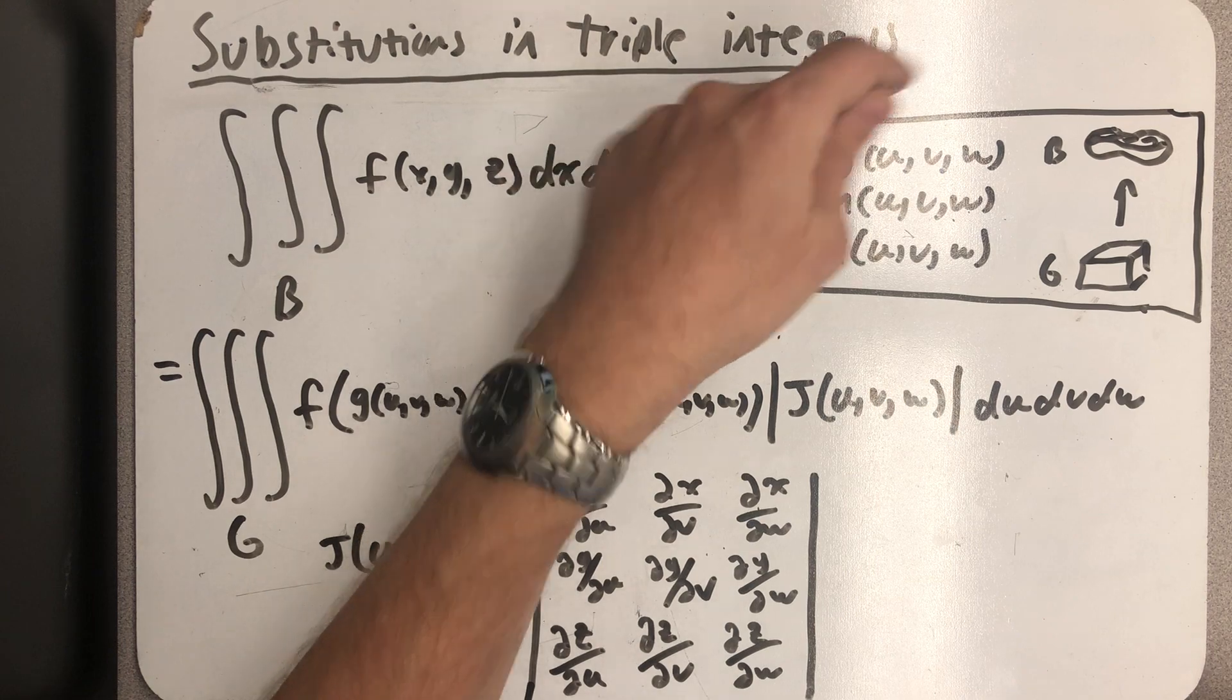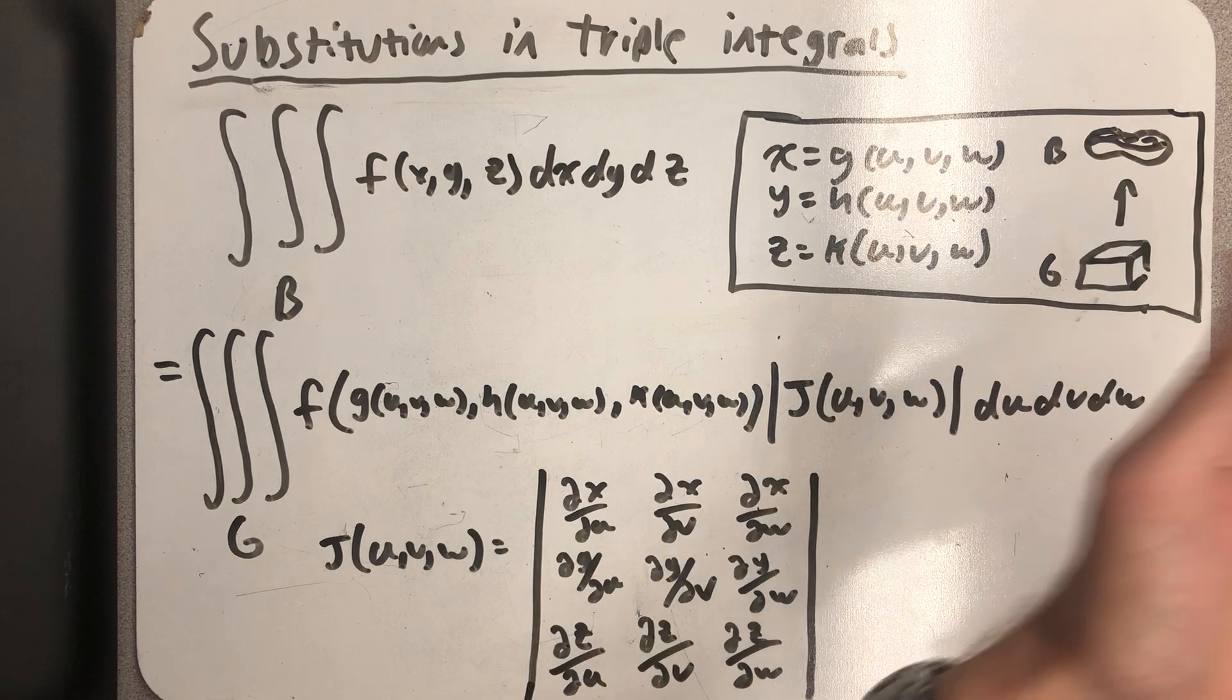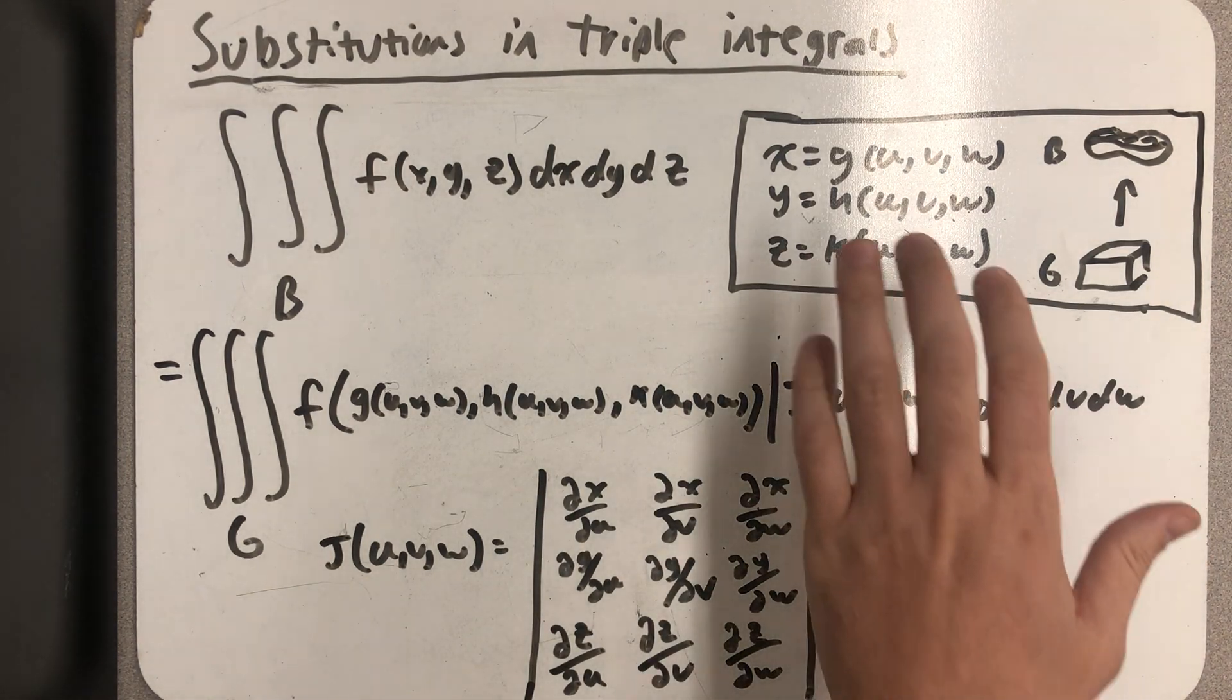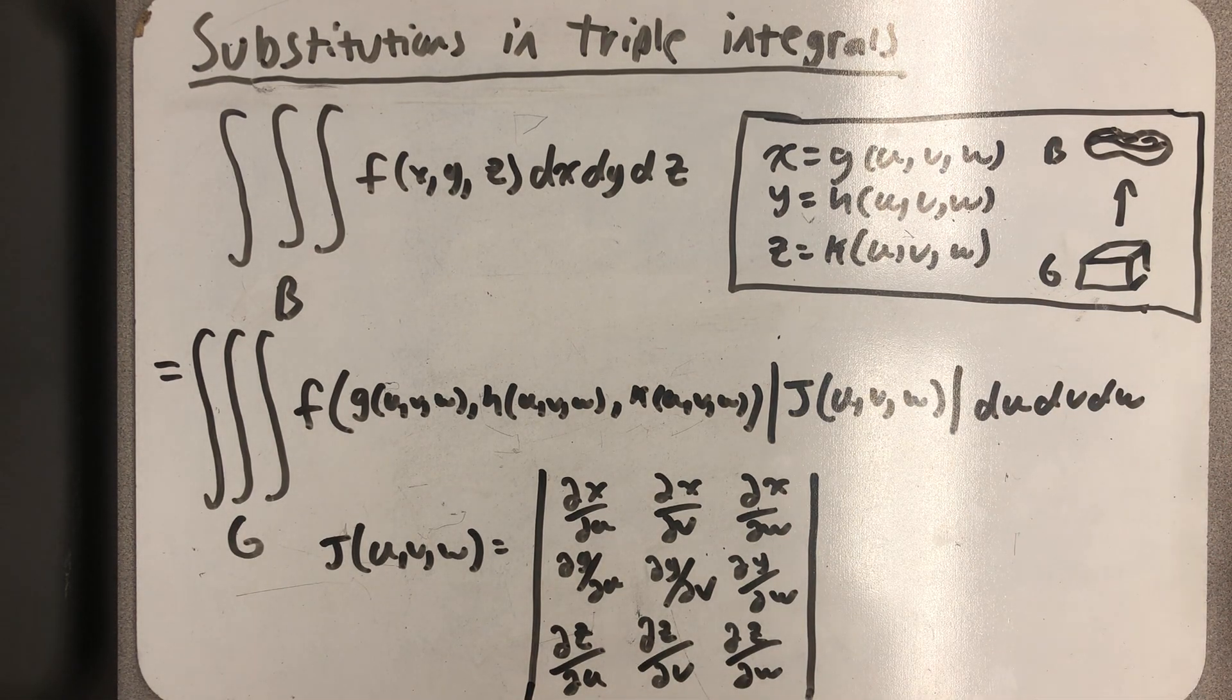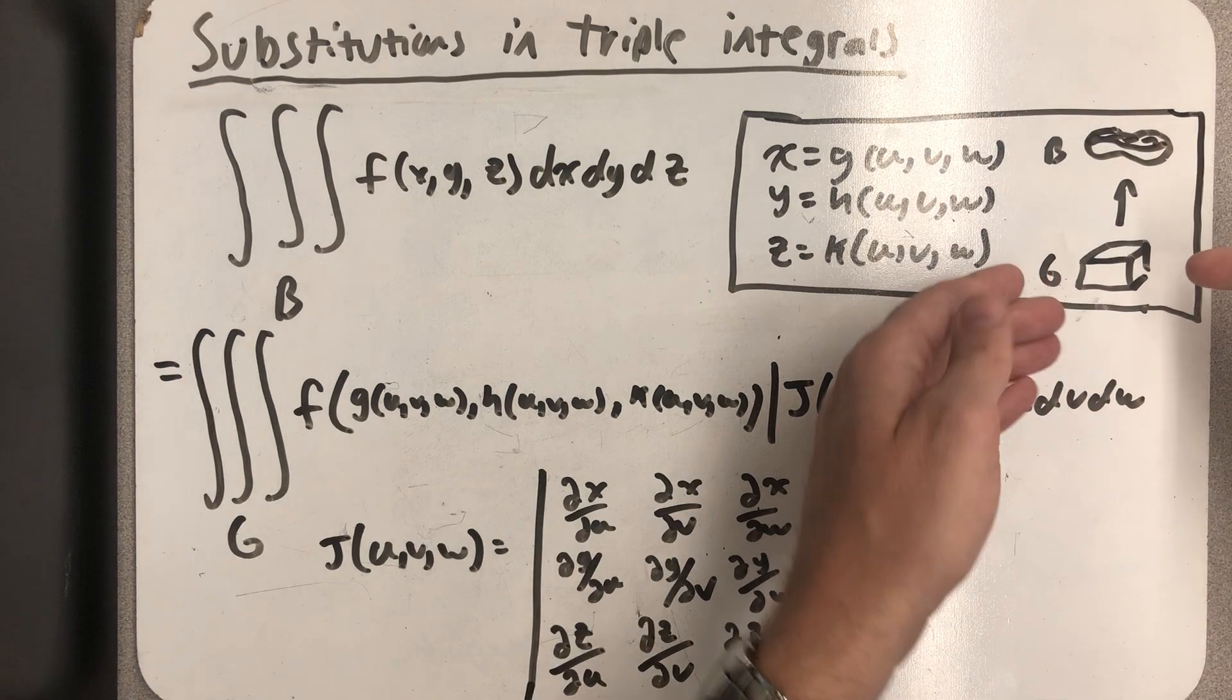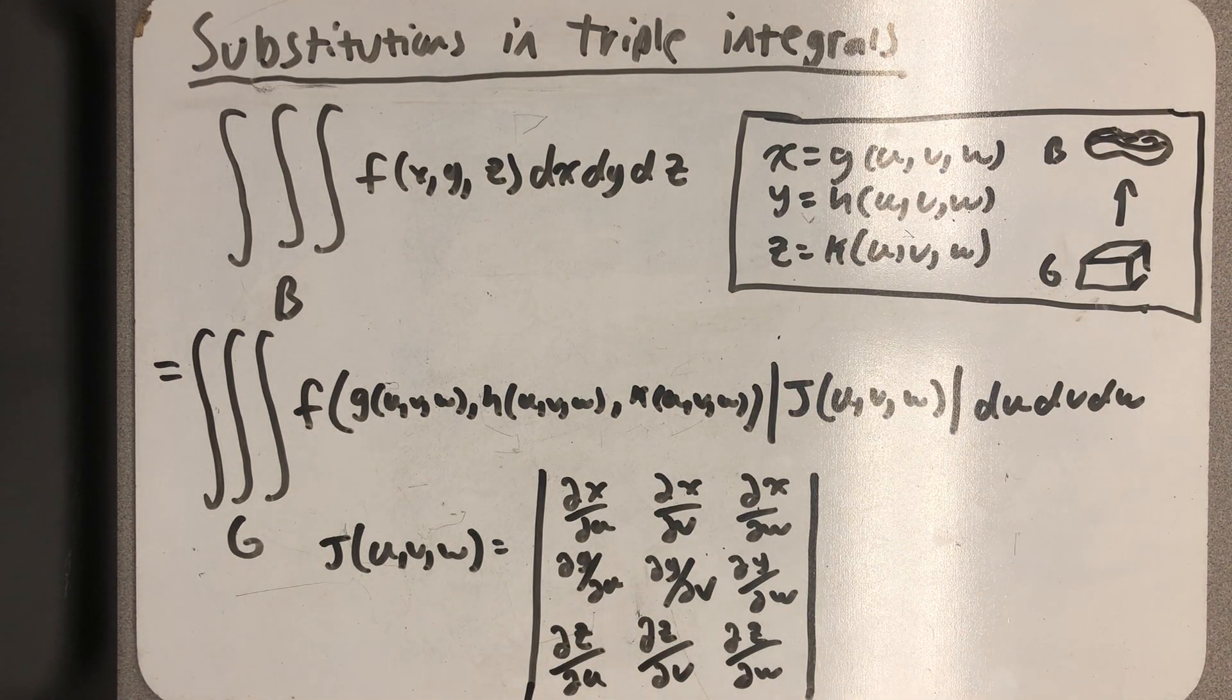So x equals g of u, v, w, where u, v, and w are my new variables. y is equal to h and z is equal to k, all on those three new variables, where u, v, w gives me a region G in uvw space. This is the region I start with, and then this is the region G. I've drawn an arrow this way because this set of functions would map G back to B, thinking of B as a pre-image.